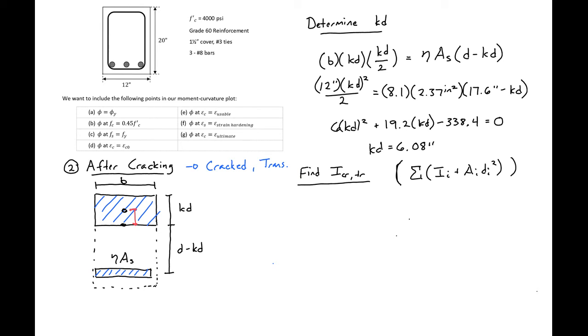Next we'll find our I cracked transformed. We'll use our parallel axis theorem again, except in this case we'll use our cracked transformed section. Our I cracked transformed equals 1/12 times our base, which is 12 inches, times our height, which in this case is 6.08 inches to the third, plus our area, which is 12 inches times 6.08 inches, and then we need our distance, which is kd over 2, so 6.08 inches over 2, and then squared.